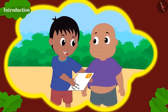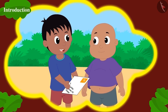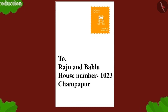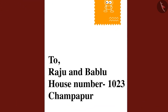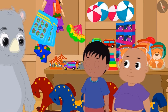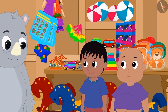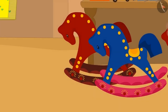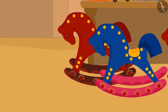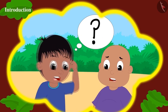Raju and Bablu have received a letter from Jeev today. The letter says that Jeev is coming to their house to celebrate Diwali along with his friends. Raju and Bablu have come to Gagu's cracker shop to buy some firecrackers. They bought a box of 12 flower pots from Gagu.